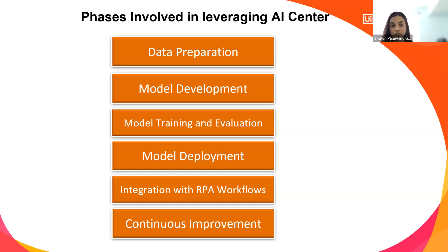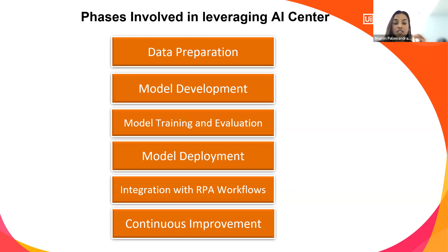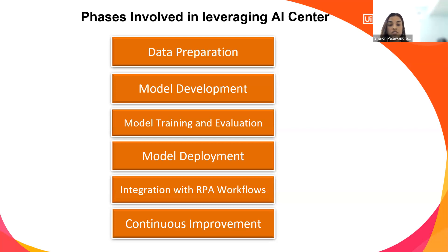Then we have the ML model development — how the model is going to get developed. Once we design and develop the model, we go into training, then evaluation, then model deployment. Lastly, once we have a good machine learning model, we integrate it with our external workflows — we can integrate it with document understanding RPA, use the endpoints and APIs, and we also offer continuous improvement of the machine learning model.